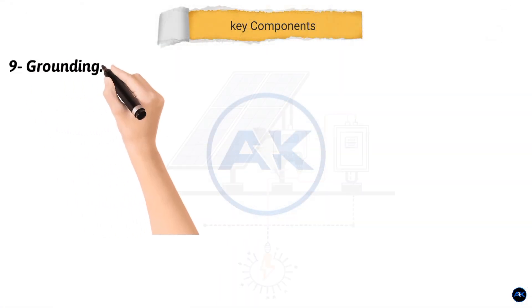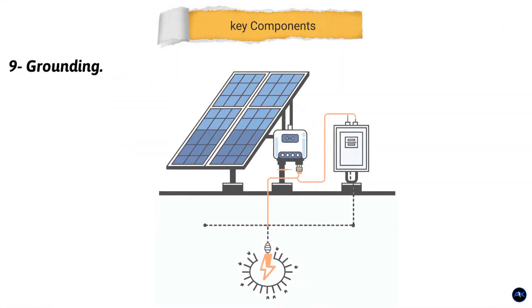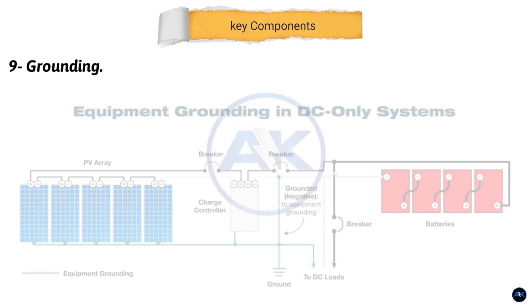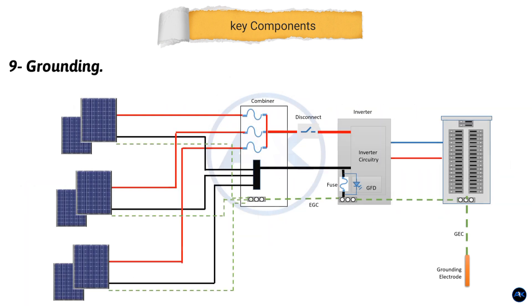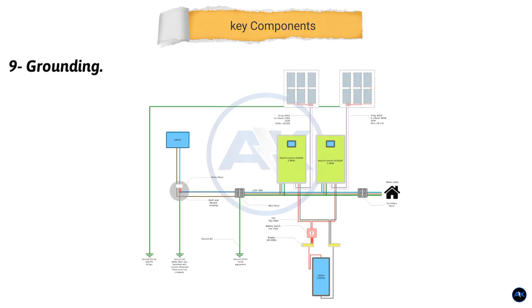Ninth, grounding. Grounding is a critical safety feature for any solar power system. Proper AC and DC grounding along with bonding protects against electrical hazards and ensures the system's safe and reliable operation.